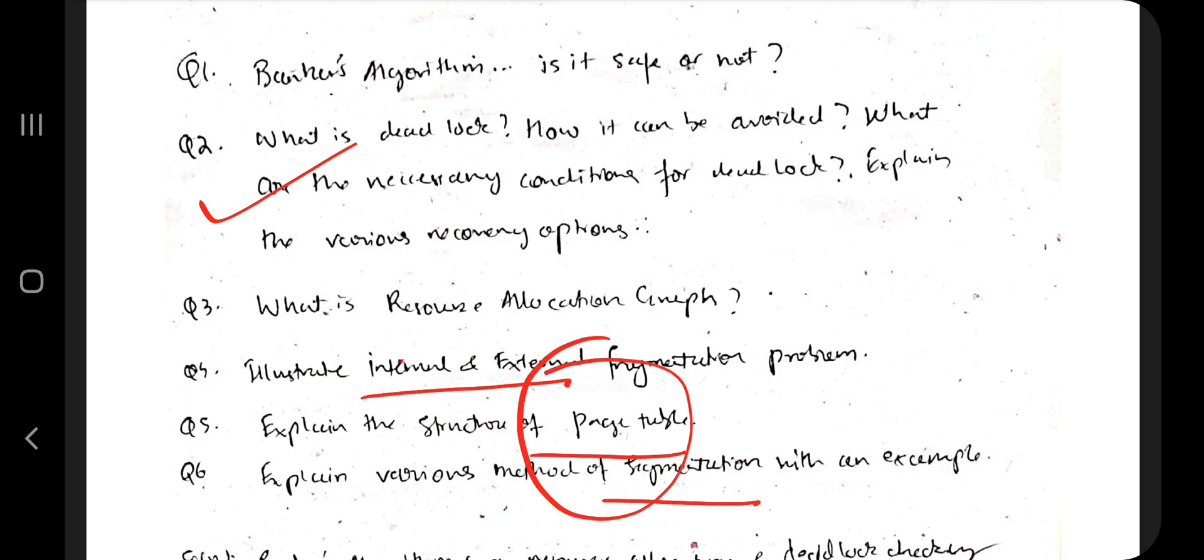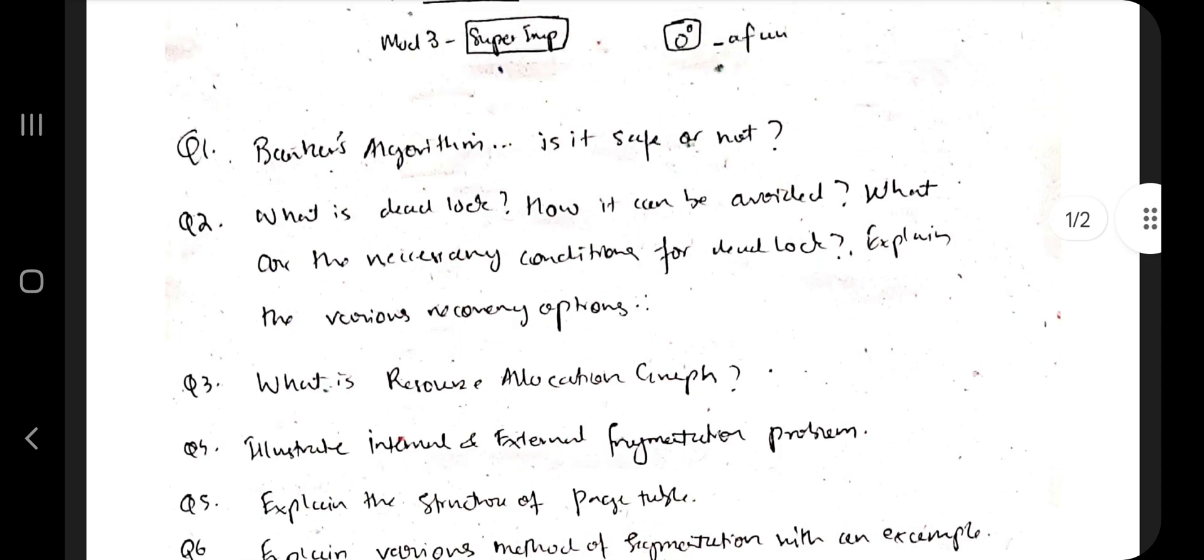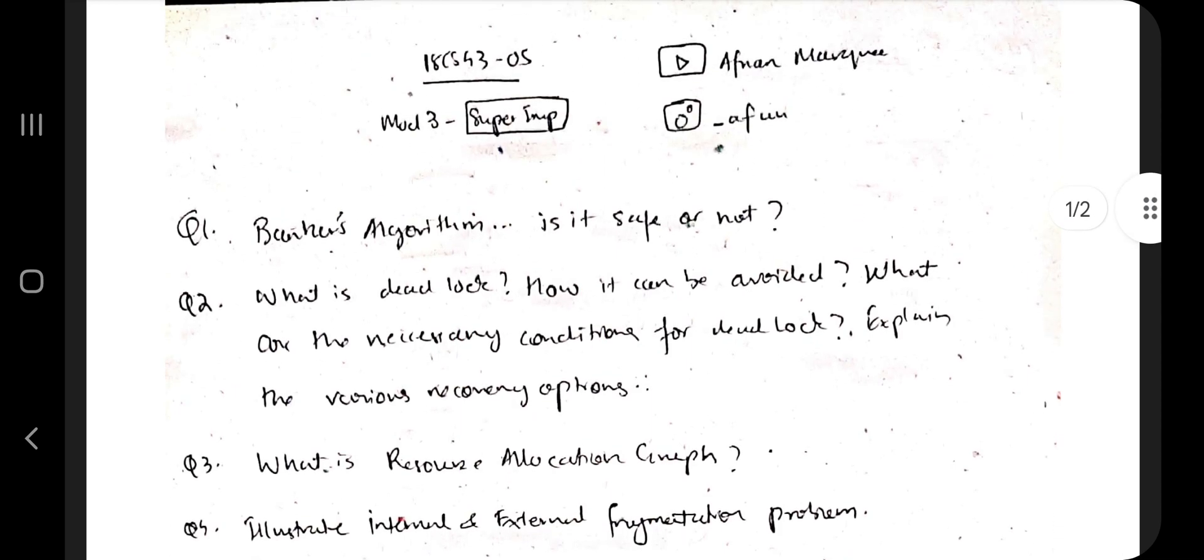These are the connected ones: resource allocation graph, deadlock, and bankers algorithm are the connected ones. So make sure you know each of this very well. I've explained A to Z in the theory video, you can go through that and watch that. This document can be found in the description, the link is given in the description box.